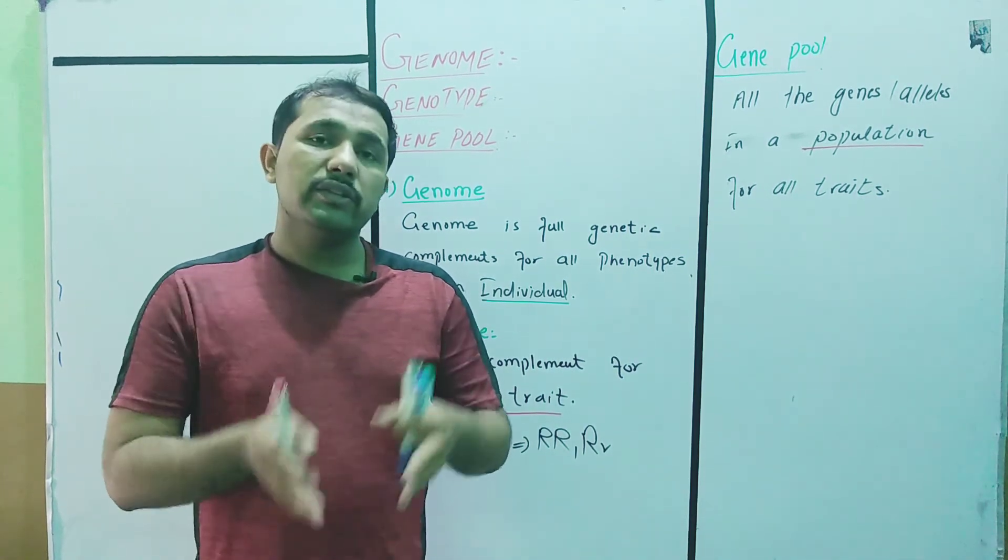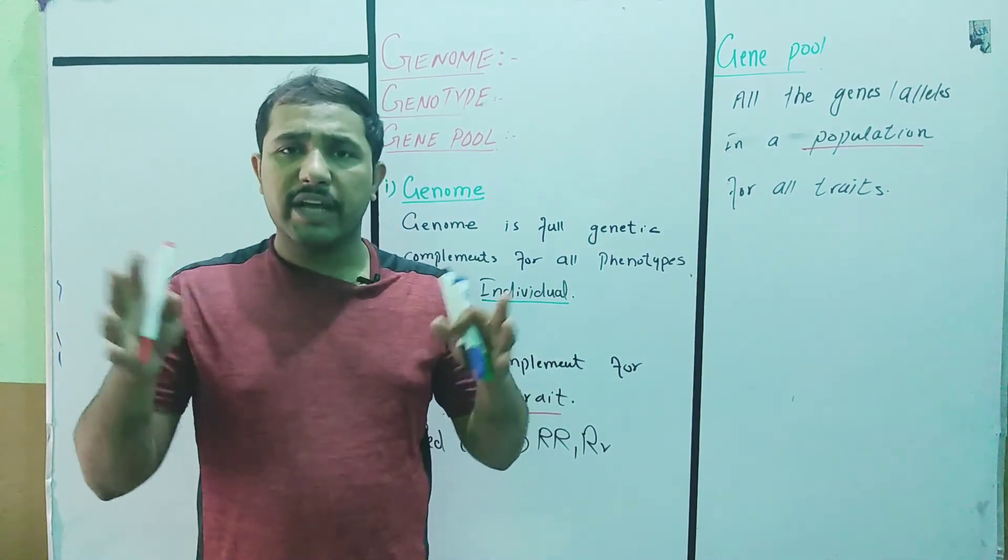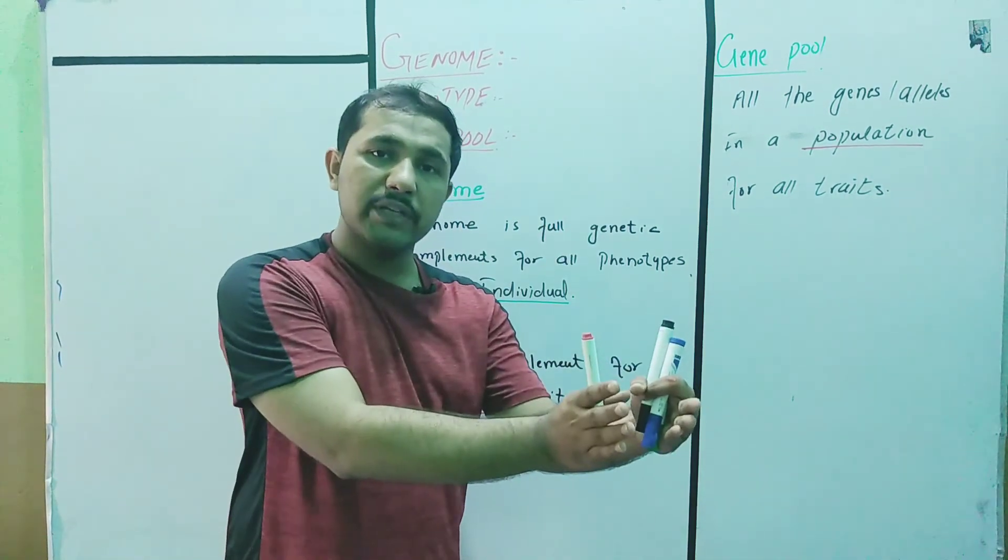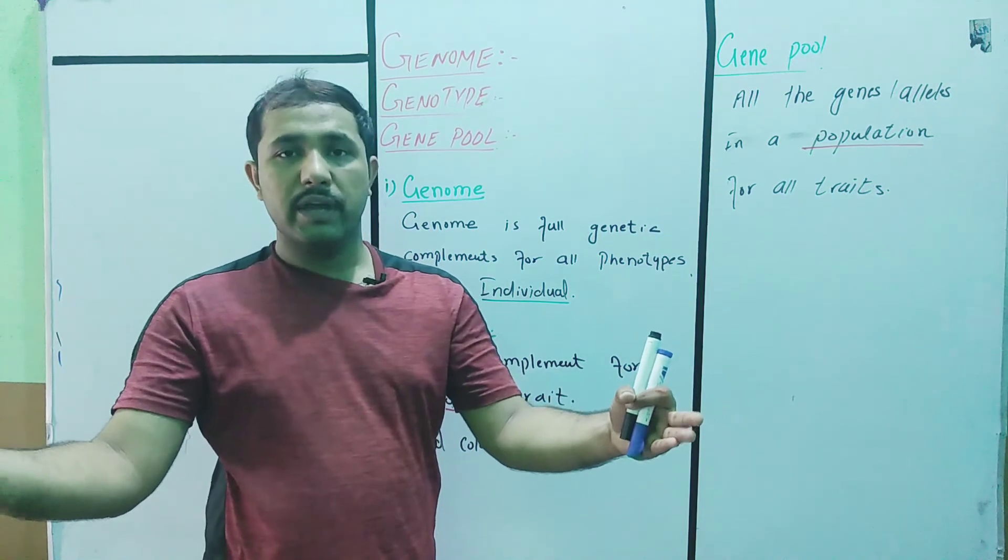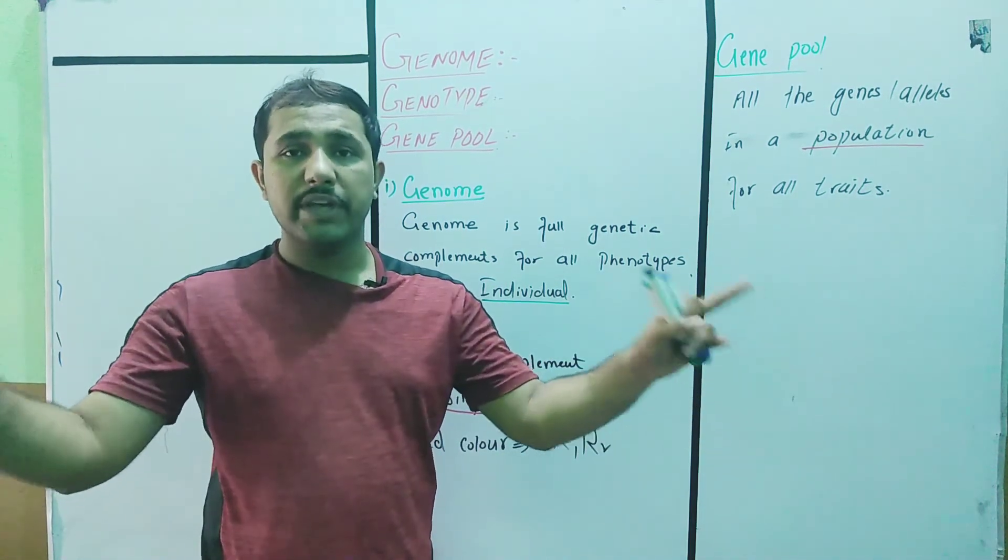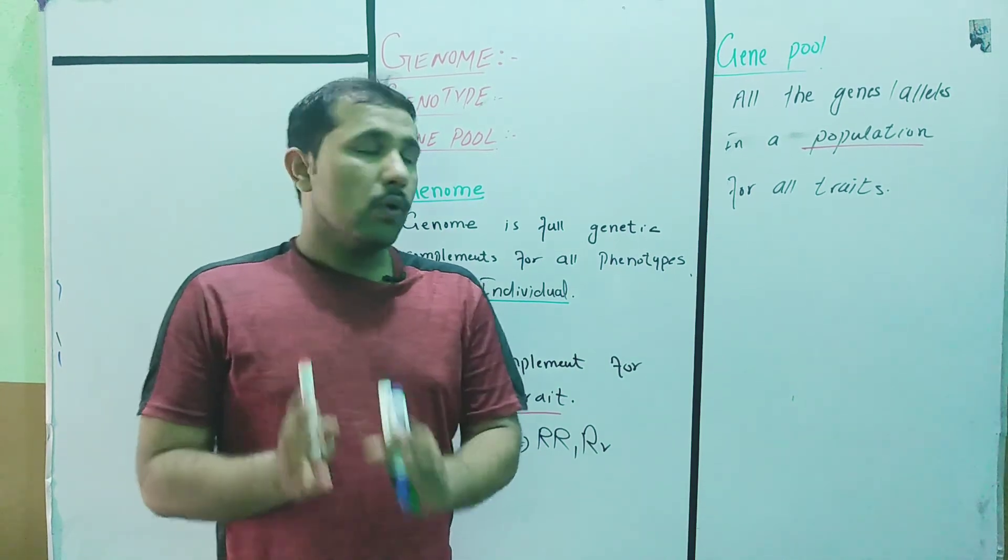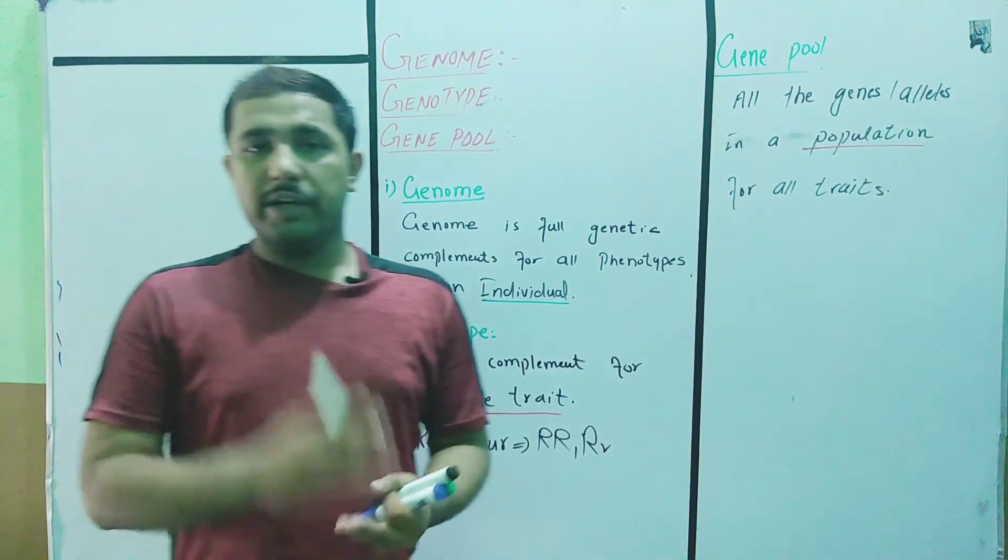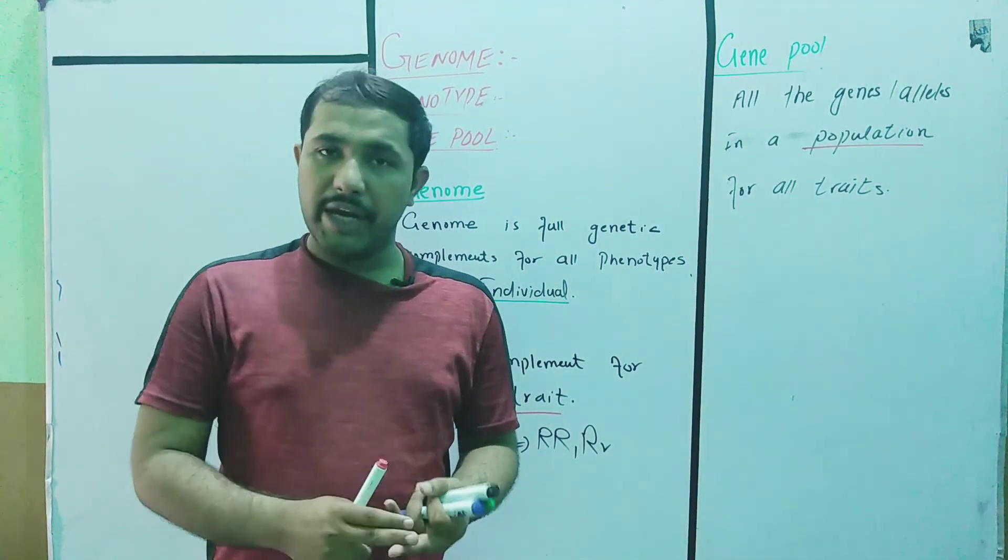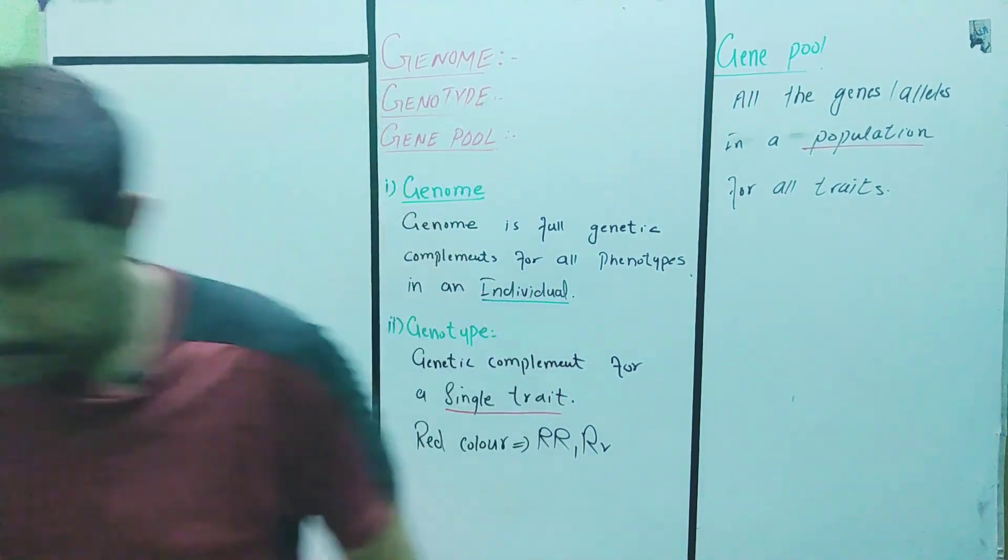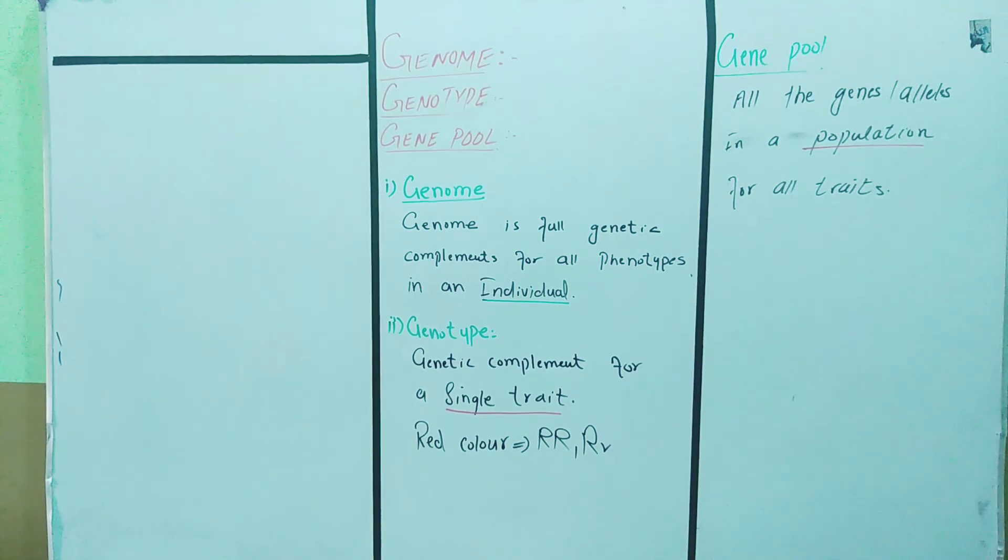That's why the height, the color, and all other traits in a specific population are different from other populations. That's why the genetic complement would also be different from one another. So genome is for individual, genotype for a trait, and gene pool for a population. Thank you.